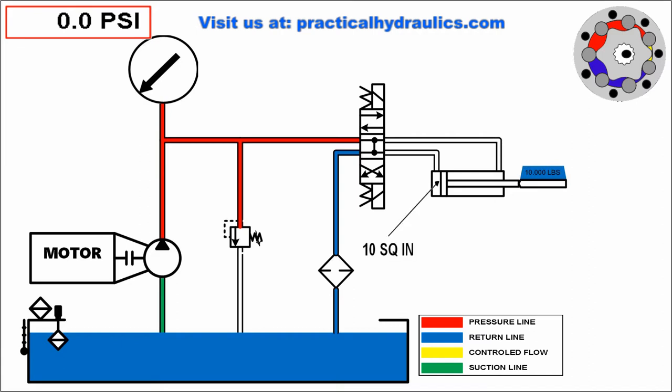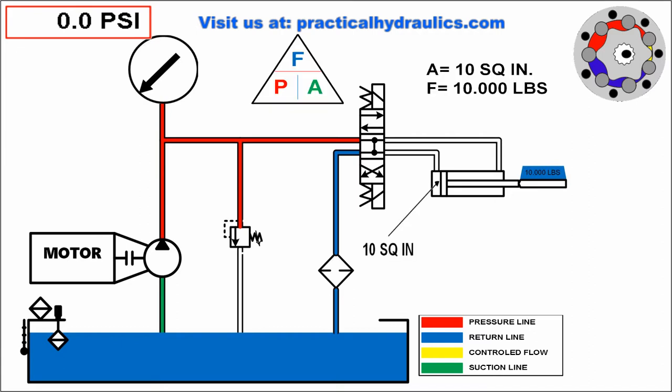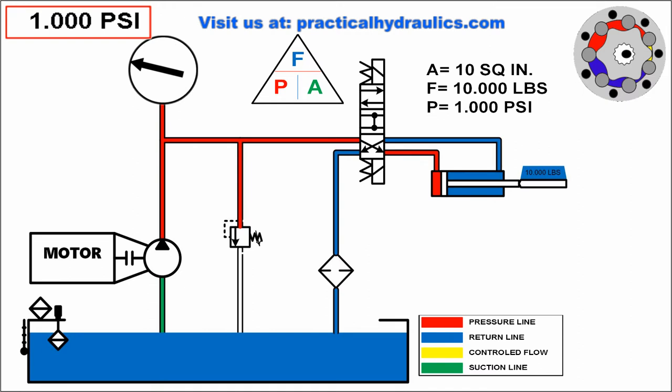In our illustration, a 10,000-pound force gives us a load-induced pressure of 1,000 psi. Based on our formula, when the cylinder is extended, the required pressure to move the 10,000-pound load is 1,000 psi, less frictional forces.